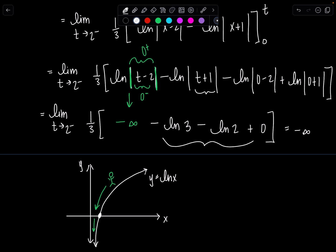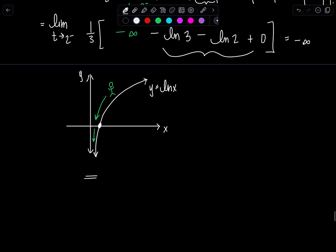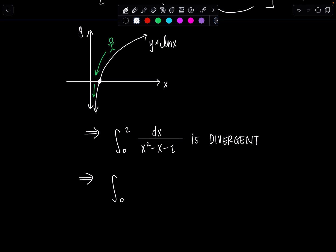What does that tell us? If the limit is not a finite number, then that means the integral we just evaluated is divergent. So this means that the integral from 0 to 2 of dx over x squared minus x minus 2 is divergent.